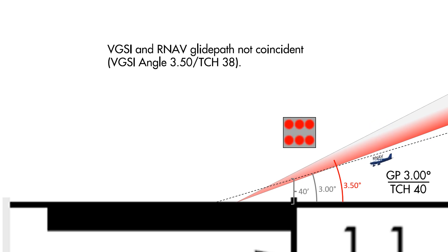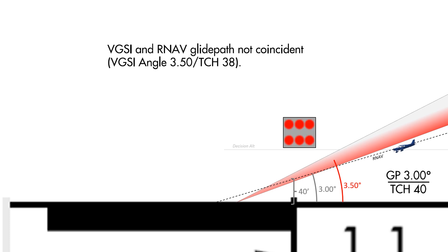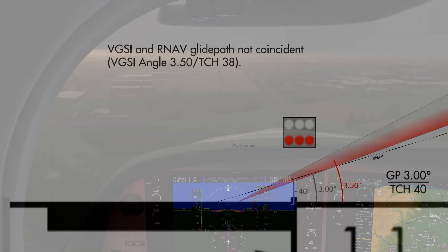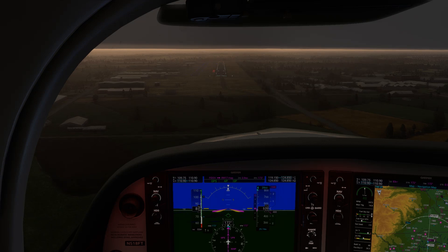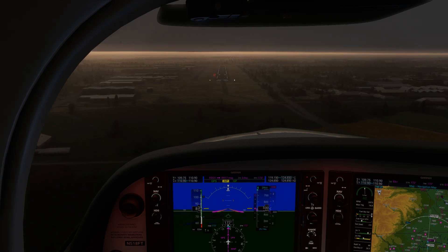The RNAV glide path sits below the VASI glide path — they're not coincident, as the note says. So when we're on an instrument approach following the RNAV glide path guidance down, we arrive at the decision altitude, look up at the runway, and because the RNAV glide path is below the VASI glide path, we see red over red. We should expect to see this thanks to the note, and now that we've transitioned to visual references, we should transition from following that RNAV guidance to following the VASI. There's no need to overcorrect — that RNAV isn't going to fly us into any obstacle. We just need to slowly arrest our descent, get onto the VASI glide path, and continue down to the runway.